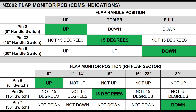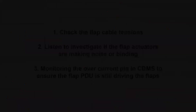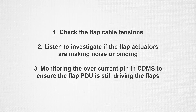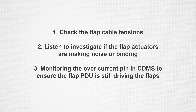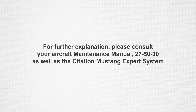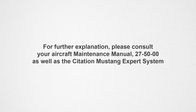Please remember not to power down avionics if you have a flaps fail CAS message in flight, as the CDMS indication showing where the issue originated from may clear if you do. Prior to replacing a proximity switch or transorb, verify the rigging of the proximity switches isn't the issue. We also recommend checking the flap cable tensions, listening to investigate if the flap actuators are making noise or binding, and monitoring the overcurrent pin in CDMS to ensure the flap PDU is still driving the flaps.